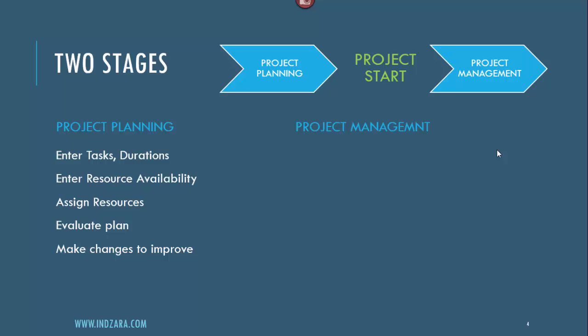The second stage is the project management stage. After you lock your project plan and the project begins, you start managing it. You update and track the actual work being done — who did the work, how long they did it, and on which days. This helps you track progress toward the project's ultimate goal. New gaps may arise during this stage and you can make changes to fix them. Finally, you share high-level reports or dashboards with stakeholders on the current status of the project.